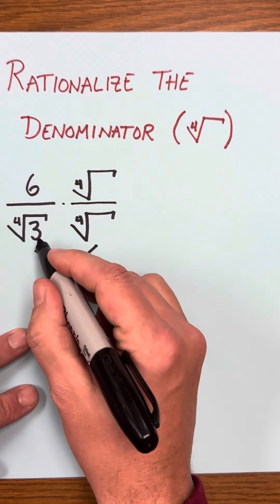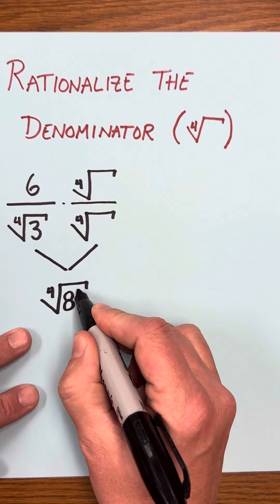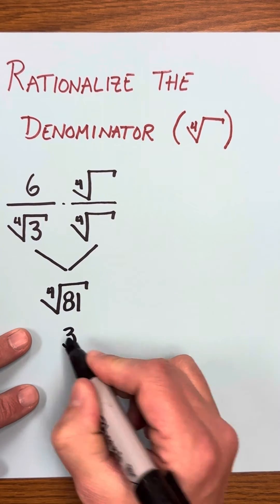For example, starting with 3, I know that I can get to 81, and the fourth root of 81 is just 3.